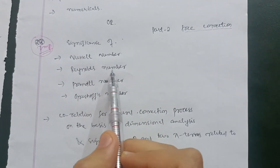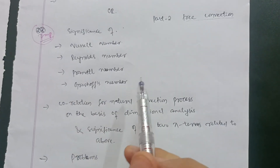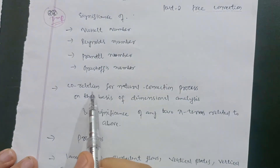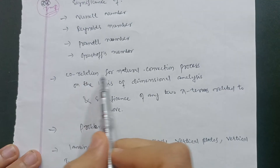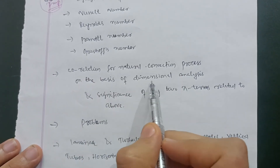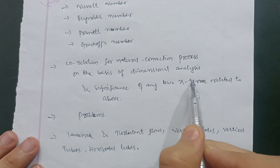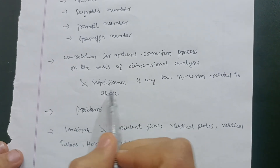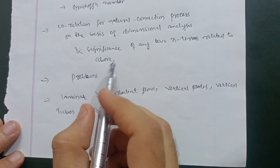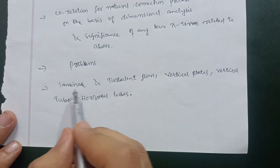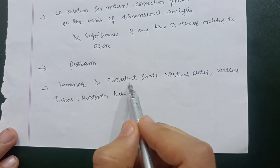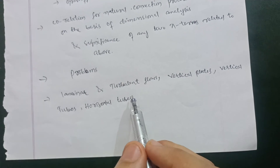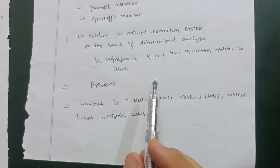In Part 2, go through the free convection part. They will ask about the significance of the Nusselt number, Reynolds number, Prandtl number, and Grashof number — this is one of the most important questions in Module 4. They will also ask you to obtain a correlation for natural convection using dimensional analysis and the significance of any two pi terms. Then solve problems on free convection. Also cover definitions related to laminar and turbulent flow over vertical plates, vertical tubes, and horizontal tubes.